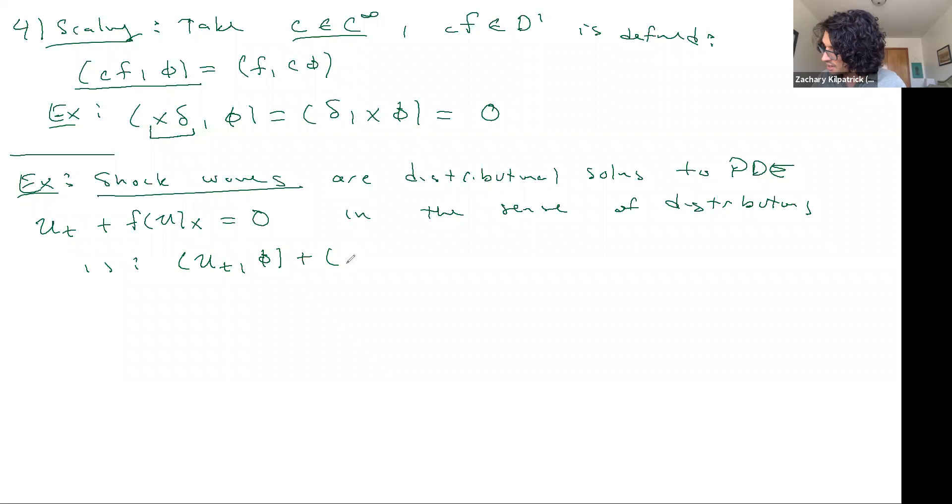And that's going to be given by U sub T integrated against phi plus F of U sub X integrated against phi. But we can, so that's equal to zero. But we can transfer these derivatives over.